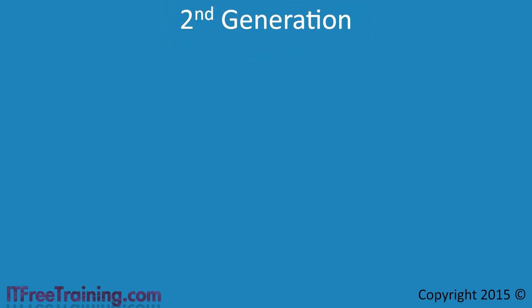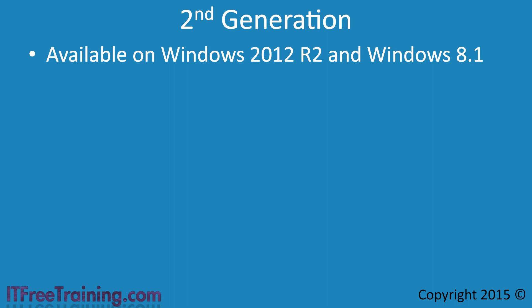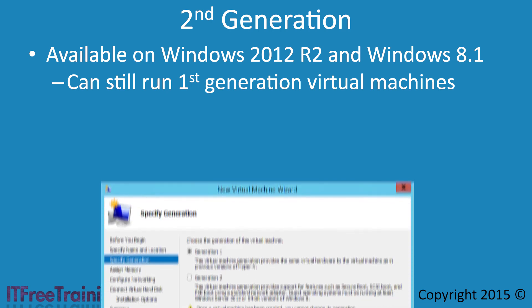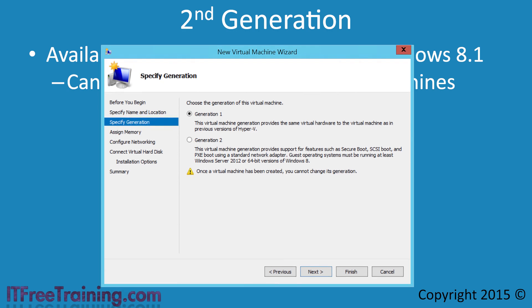In order to use second generation virtual machines, you require Windows Server 2012 R2 or Windows 8.1. On these operating systems, you can still run first generation virtual machines or a combination of both. When you create a virtual machine using the new virtual machine wizard, as shown, you will be asked which generation of virtual machine you want to create. The option you choose determines the virtual hardware that will be used with the virtual machine.